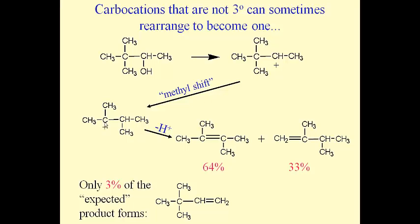If the methyl group moves over, the positive charge relocates because now this carbon over here only has three bonds, so it's the one with the positive charge. But that's a little bit better for this molecule because notice it's tertiary. This methyl shift only occurs because we can take what's a secondary carbocation and make it tertiary — much more stable.